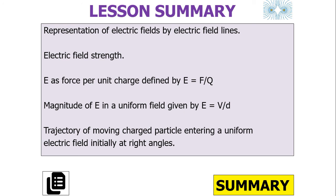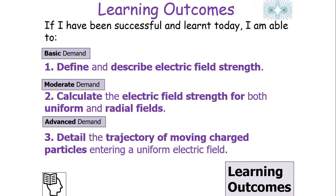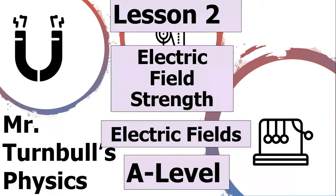So what we've learnt in today's lesson: we can remember what electrical field strength is, we can define it as F over Q, and in a uniform field it's E equals V over D. We can map out the trajectory of moving charged particles entering a uniform electrical field initially at right angles. We know what electrical field strength is, we can define it, describe it, calculate it for uniform and radial fields, and detail the trajectory of a moving charged particle entering a uniform electrical field. I hope you've enjoyed today's lesson looking at the motion of electrically charged particles in an electrical field — have a lovely day.